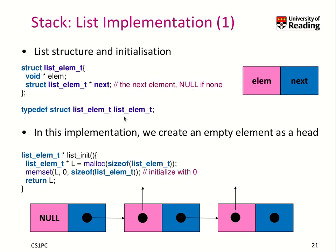We define our data type as list element type. When we initialize a list, all we need to create is an empty element as a head element. We use malloc to create this data structure and memset to initialize it with zero. Then you have this list head as the first element, and then pointers to the elements and the pointer to the next element in this list, where the last element should be a null pointer.